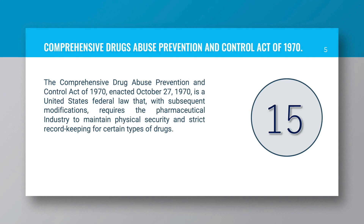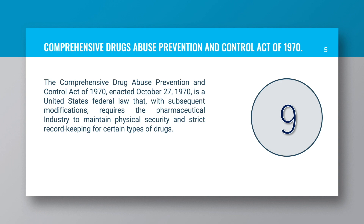The Comprehensive Drug Abuse Prevention and Control Act of 1970, enacted October 27, 1970, is a United States Federal law that, with subsequent modifications, requires the pharmaceutical industry to maintain physical security and strict record keeping for certain types of drugs.